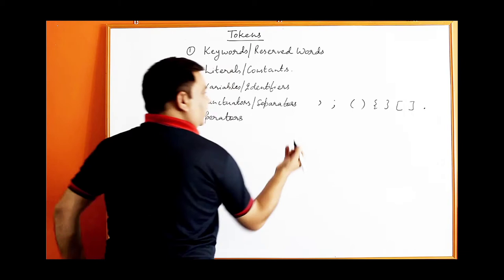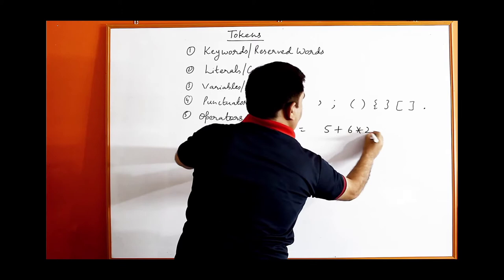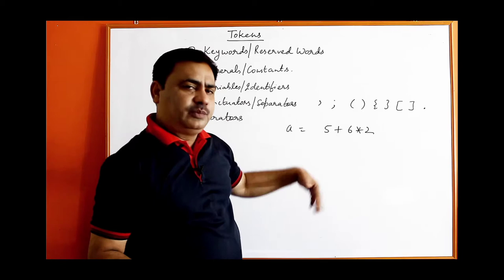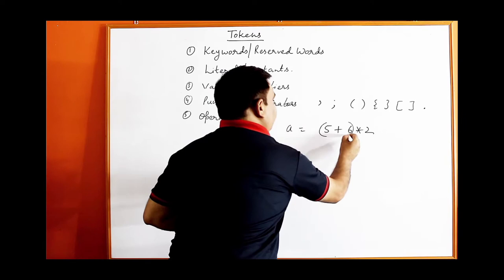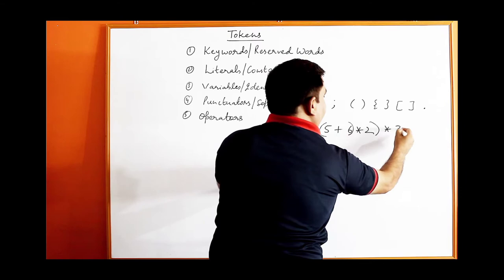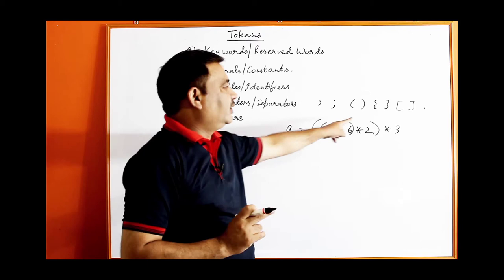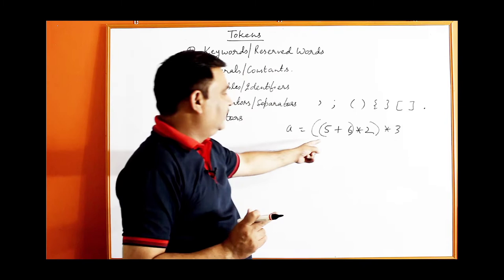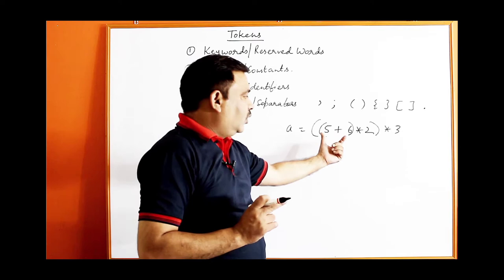The round bracket is generally used in math expressions. For example, 5 plus 6 multiplied by 2 — by BODMAS rules you multiply first, giving 12 plus 5 equals 17. But if you use round brackets like (5 plus 6) multiplied by 2 you add first giving 11 times 2 equals 22. In Java always use round brackets for mathematical expressions, not curly or square brackets. The compiler resolves the inner bracket first, then outer.